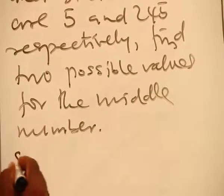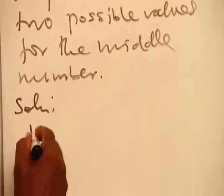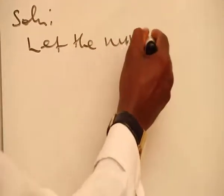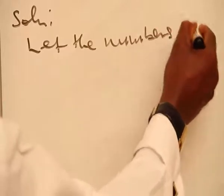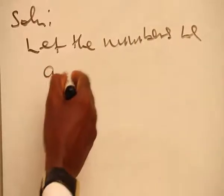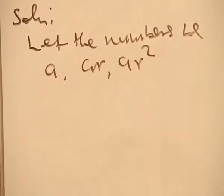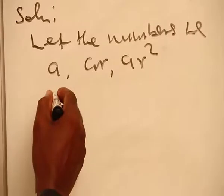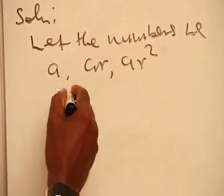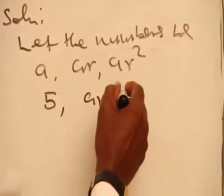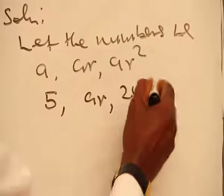Solution. Let the numbers be A, Ar, and Ar squared, which now becomes 5, then Ar, and then 245.